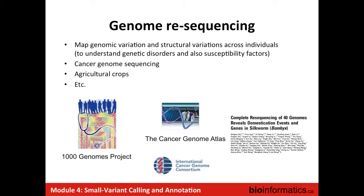Now let's talk about SNV calling. People do genome resequencing mainly to map genetic variation and structural variation — to find variants in individuals. This is the main purpose. It is done mainly for rare disease, but also in cancer, agriculture, and large projects like the Southern Genome Project, which aims to get a global picture of variation in the human population.